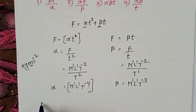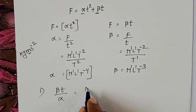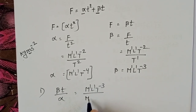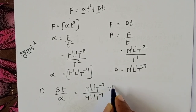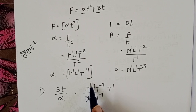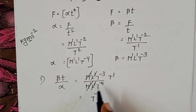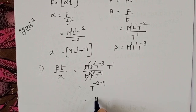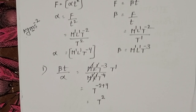Check the first option: beta t divided by alpha. Dimensions of beta into t power 1 divided by dimensions of alpha — M and L cancel. T power minus 3 plus 1 in the numerator gives T power minus 2; dividing by T power minus 4 brings minus 4 to the numerator as plus 4, giving T power 2. This is not a dimensionless quantity.